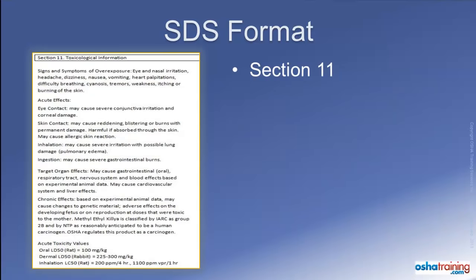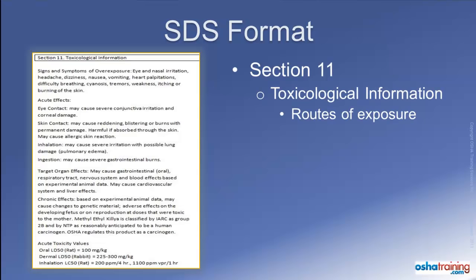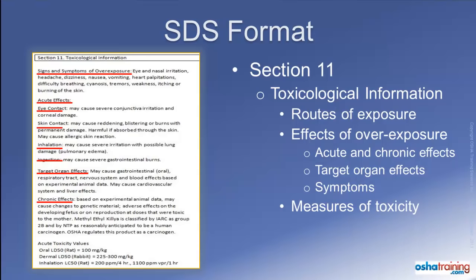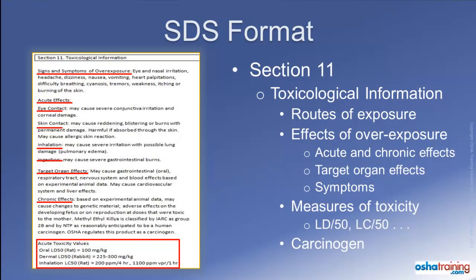Section 11, titled Toxicological Information, lists the known routes of exposure the chemical can use to get into your system, including inhalation, ingestion, and skin and eye contact. Also listed are the effects of exposure to the product, which include acute and chronic effects, applicable target organ effects, and a description of symptoms associated with overexposure. There will also be specific measures of toxicity where applicable, such as LD50 — the estimated amount of a substance expected to kill half of exposed test animals in a single dose. And if a chemical is listed as an actual or potential carcinogen, that information will be provided in this section too.